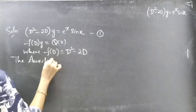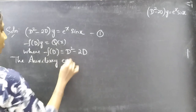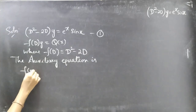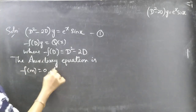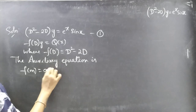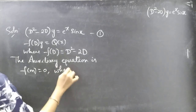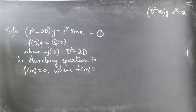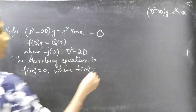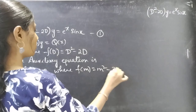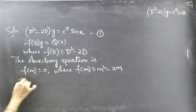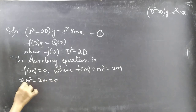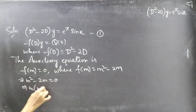The auxiliary equation is f(D) = D² - 2D. Replace the differential operator D by m, so f(m) = m² - 2m. The auxiliary equation becomes m² - 2m = 0.